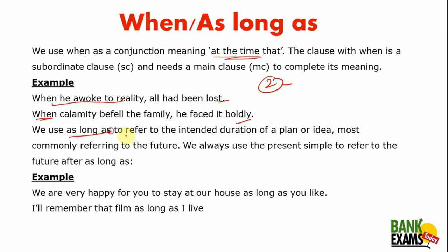We use 'as long as' to refer to the intended duration of a plan or idea — the time period is not confirmed, so we give a rough idea of time, commonly referring to the future. For example: 'We are very happy for you to stay at our house as long as you like' — the person is not confirmed how long he will stay. Another: 'I will remember that film as long as I live.' We don't know how long that is, so there is no surety, no confirmation, no finite time period — we use 'as long as'.